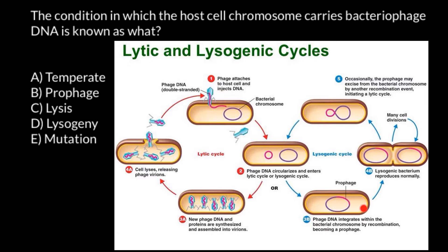But at stage 2 another variant is possible: the circular DNA or RNA of the virus integrates into the genome of the bacteria. This virus won't cause any harm, and the bacteria may replicate. Instead of one bacteria we may end up with millions of bacteria with integrated bacteriophage. At this stage, when the bacteriophage genome is integrated with the genome of the bacteria, we call this a prophage.